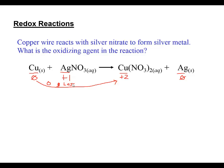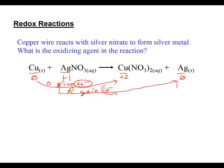The silver is being reduced - its oxidation number is decreasing, and it must be gaining electrons. One silver cation at plus one is forming one neutral silver atom, so there's only one electron transferred per silver atom. Since two electrons are lost by the oxidation process and only one electron is gained by the reduction process, this isn't a balanced chemical reaction.